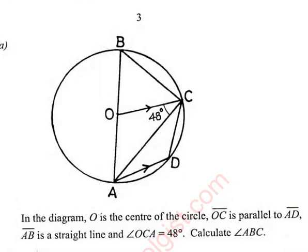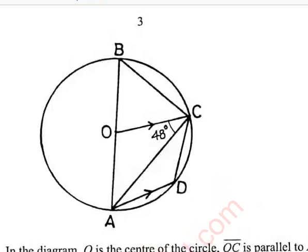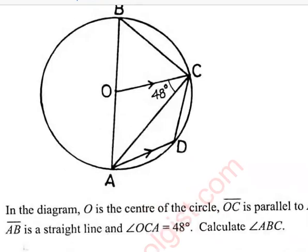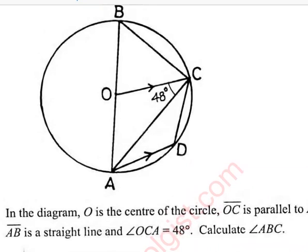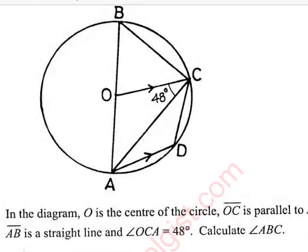So how do we calculate this angle here? ABC is this angle, isn't it? This angle here, that's the angle that we're supposed to find.